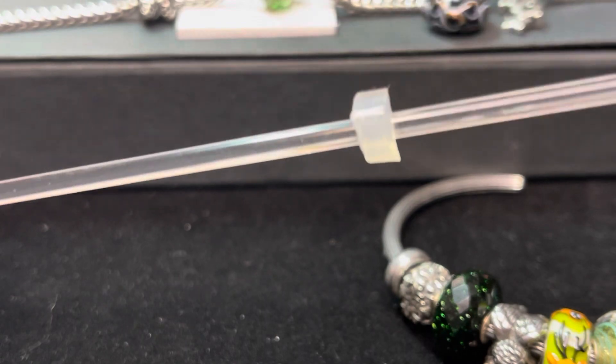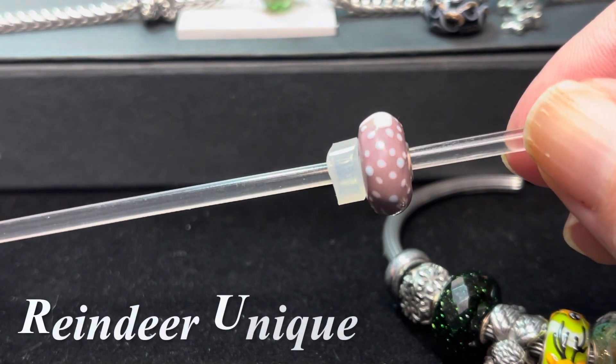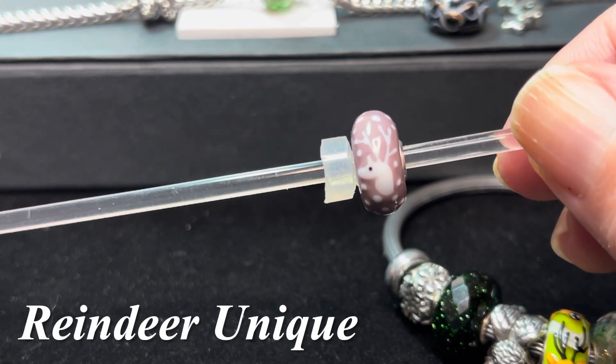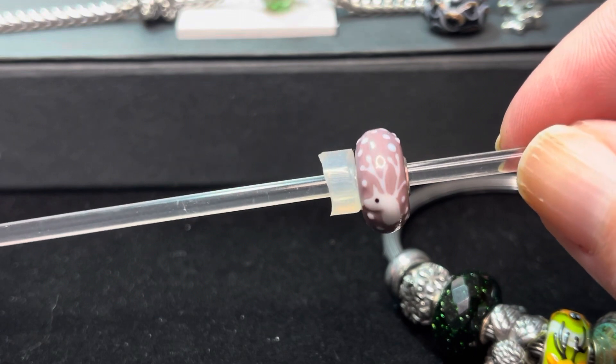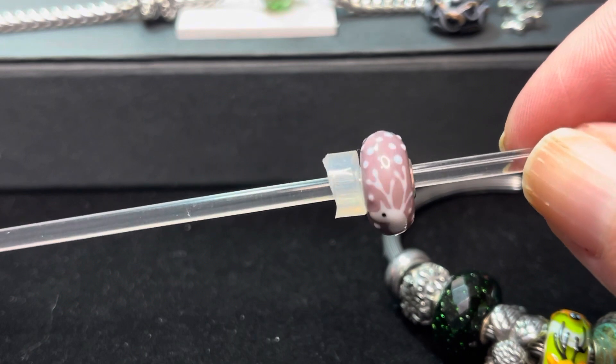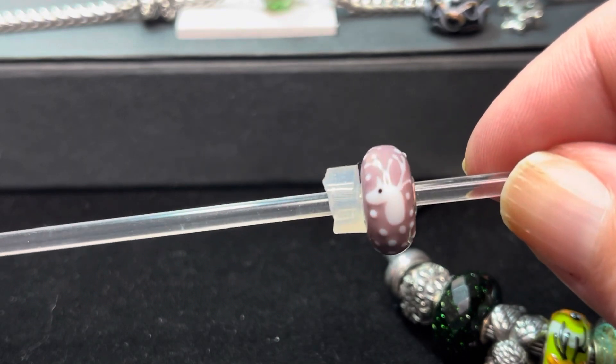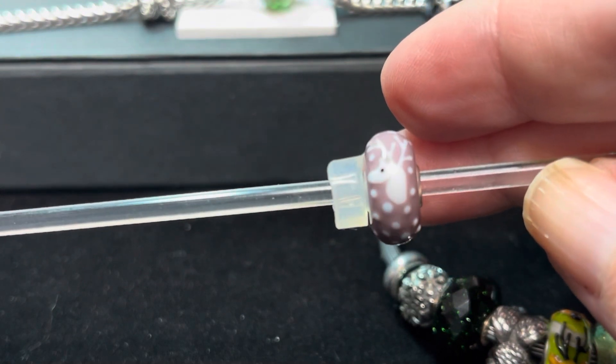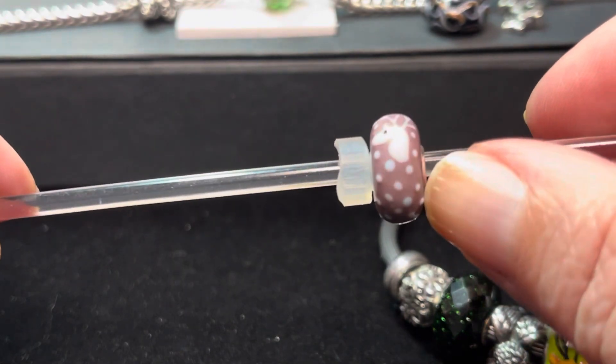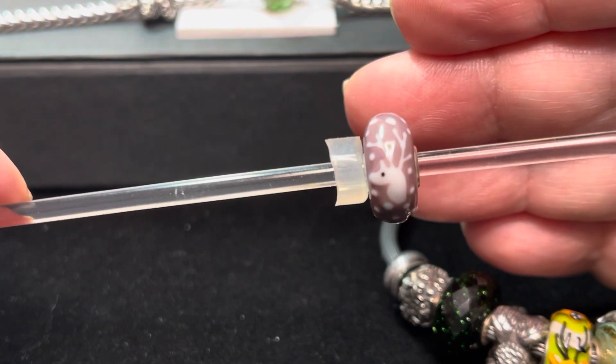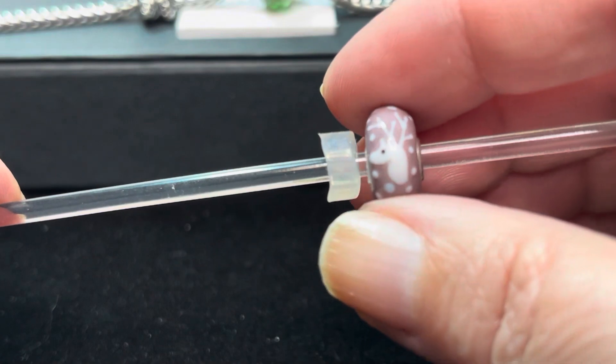Then I did treat myself to another pretty Reindeer Unique. This one is kind of a pinkish mauve. You can see it has a very simple white stag. The stag has a little black dot for its eye, and then it has these little dots of snow. Some of the dots are kind of blue, while others are white. This one is completely opaque, but I just thought this was so pretty and I could not resist it.